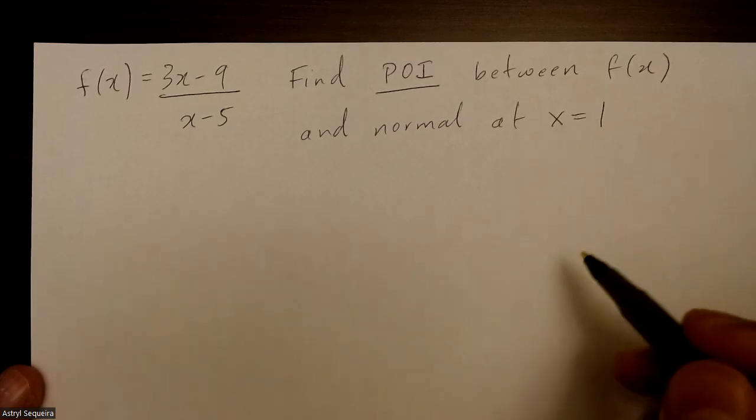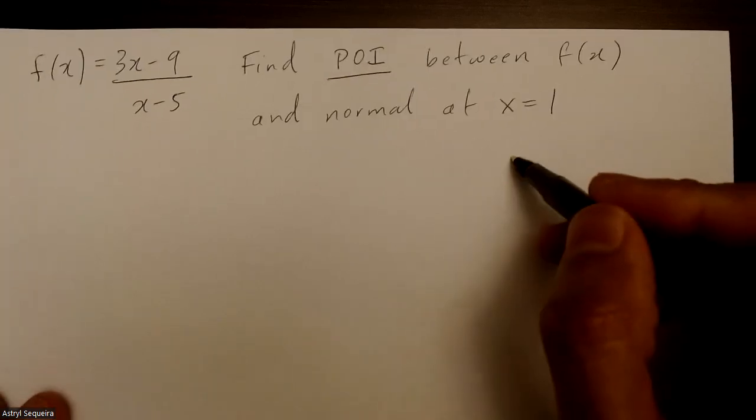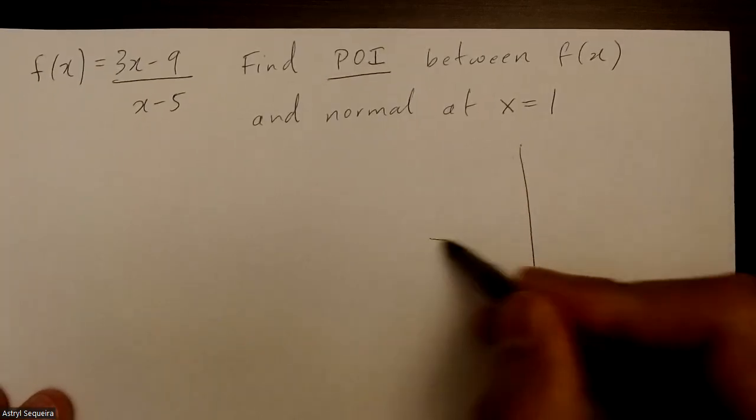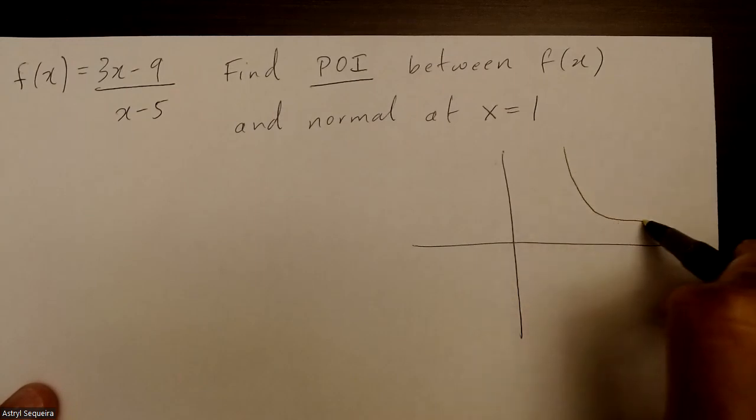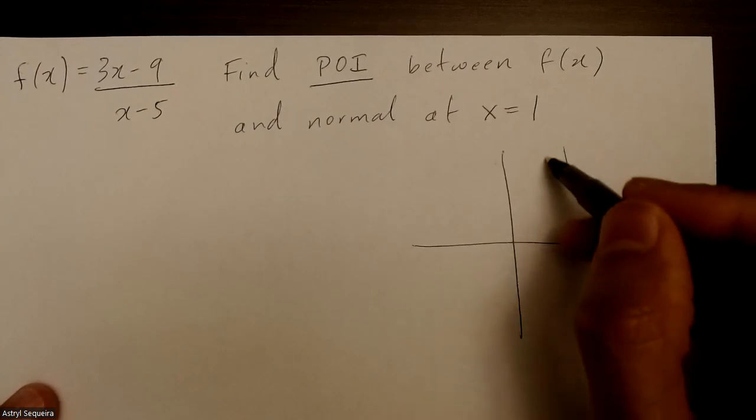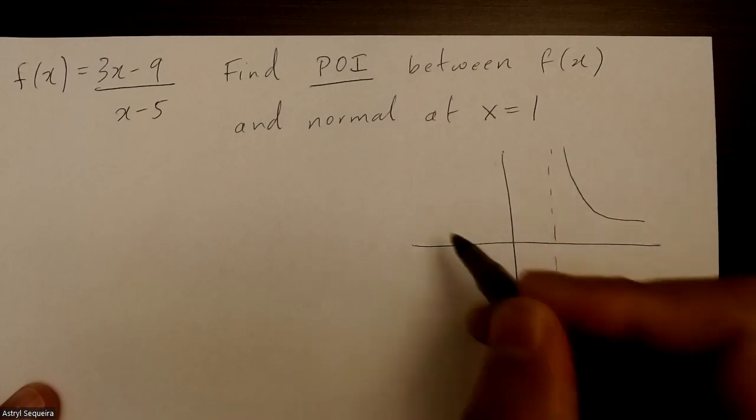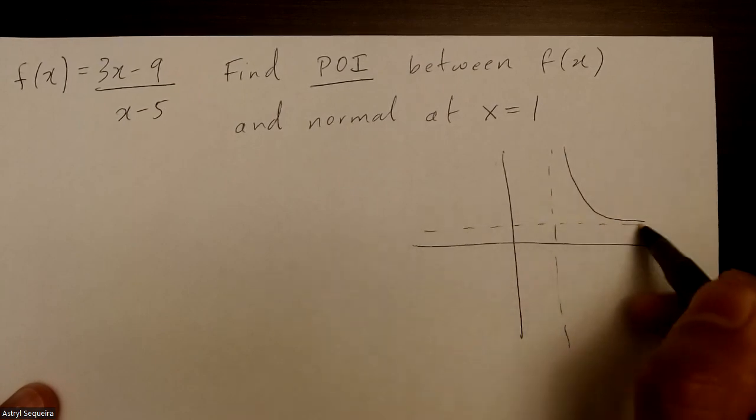So let's do a quick sketch of this to first understand what this question is actually asking. Your rational function looks something like this. There's a vertical and horizontal asymptote.